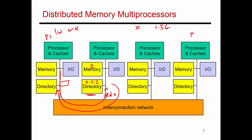Then P4 comes along and also does a read of x. It tries to load x into some register, looks up its cache, has a cache miss. The network interface sends the request, gets the data from memory, and that gets returned to P4. The directory state is updated to say that there's a copy of x in both node 1 and node 4.